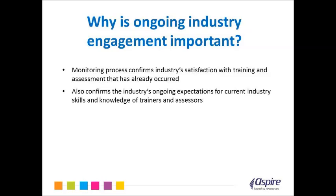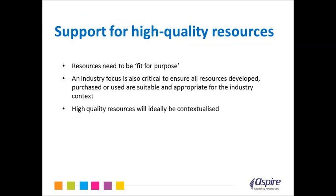Why is this ongoing industry engagement important? When monitoring the implementation of training and assessment strategies, RTOs should continue to engage with industry and seek feedback about how they have provided training and assessment, including feedback on the resources used for both training and assessment. The monitoring process confirms industry's satisfaction with all training and assessment delivery that has already occurred, and also confirms the industry's ongoing expectations for current industry skills and knowledge of the RTOs' trainers and assessors. As with any monitoring process, these activities identify any issues or items as they occur and also ensure that any industry changes or updates are captured for future training and assessment delivery activities.